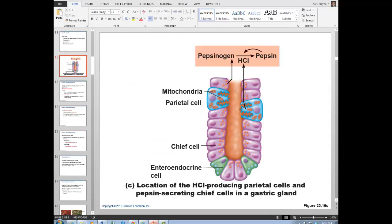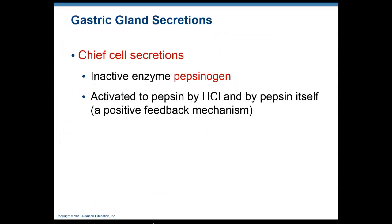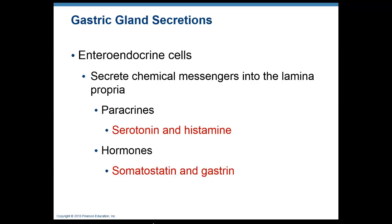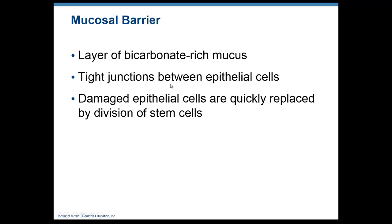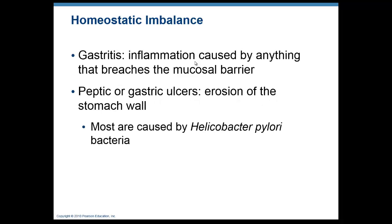To recap: chief cells and enteroendocrine cells include paracrines secreted locally into the stomach lumen — histamine and serotonin — and hormones secreted to the blood — gastrin and somatostatin. Somatostatin is the one that inhibits digestive activity. The mucosal barrier consists of alkaline-rich mucus to protect the stomach lining. Any inflammation or damage to the stomach wall risks contents leaking into the abdominal cavity, causing serious infection.